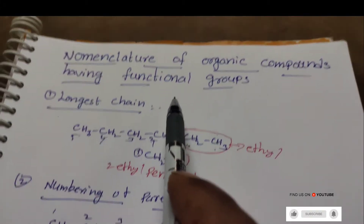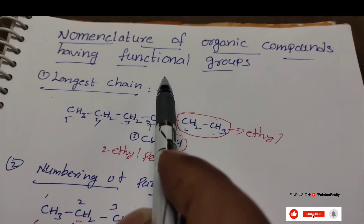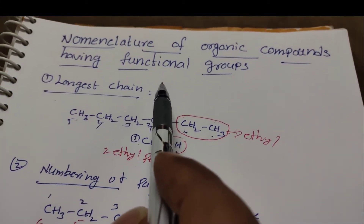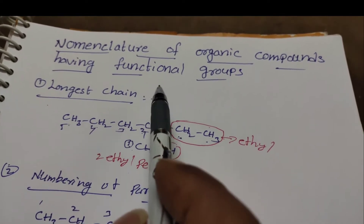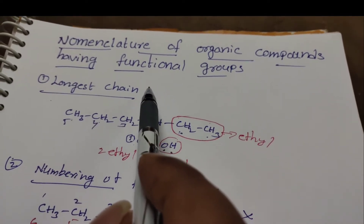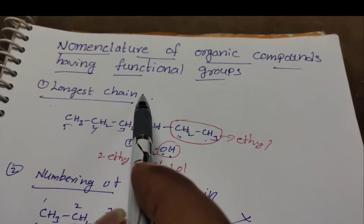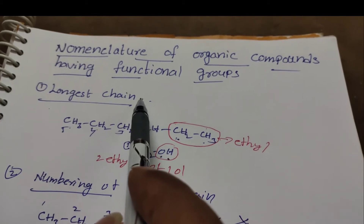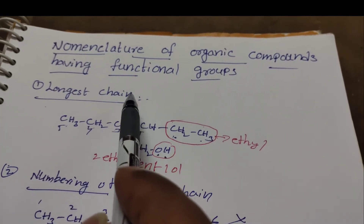Organic compounds having functional groups also have some rules for nomenclature. We will try to discuss each and every rule in detail, along with examples.